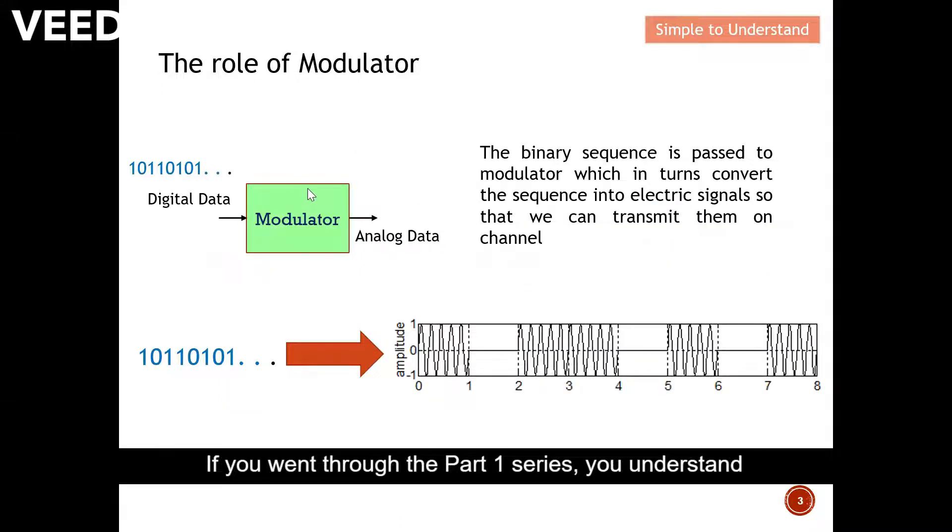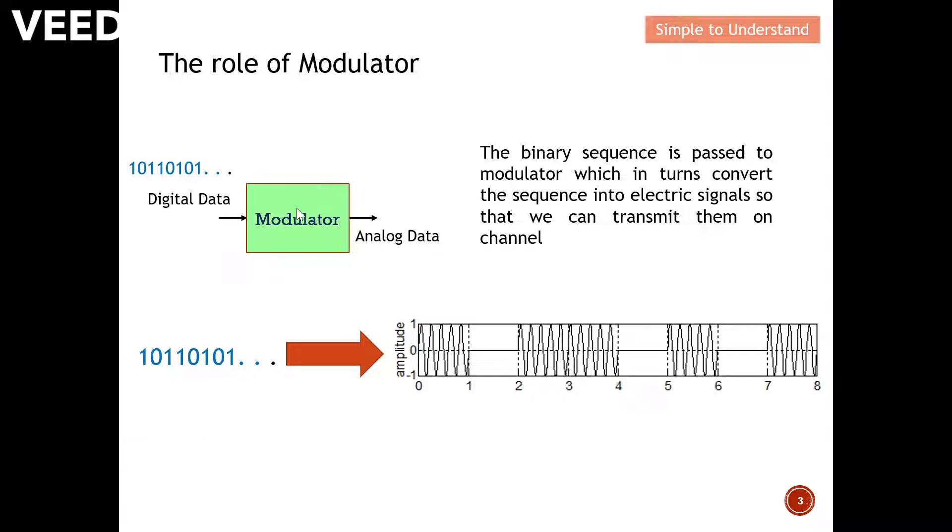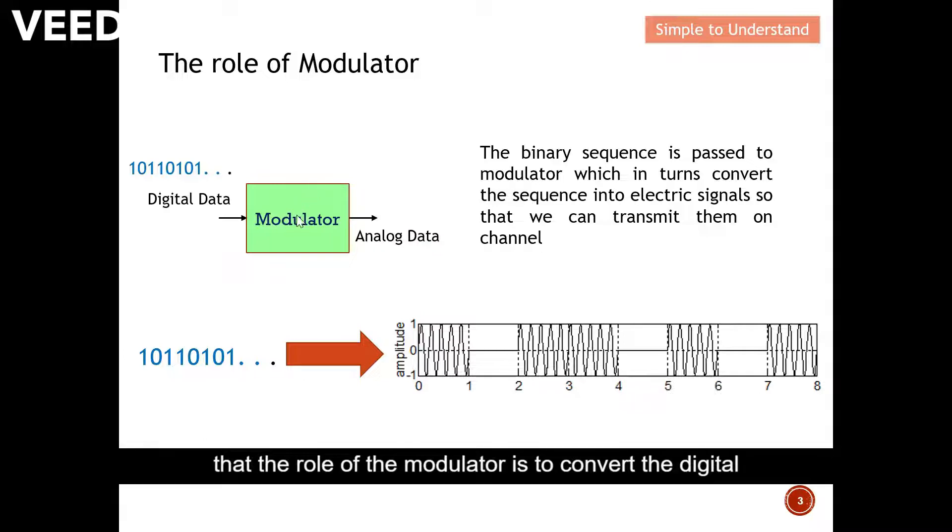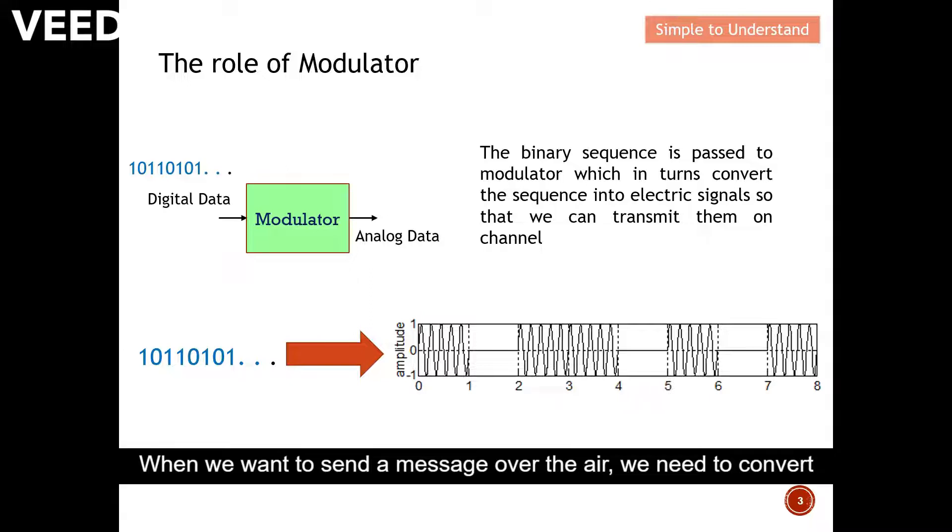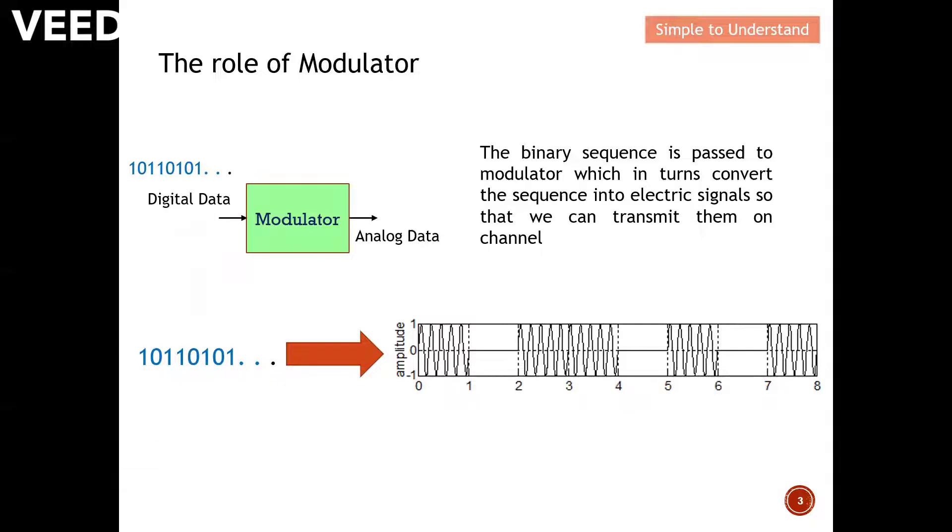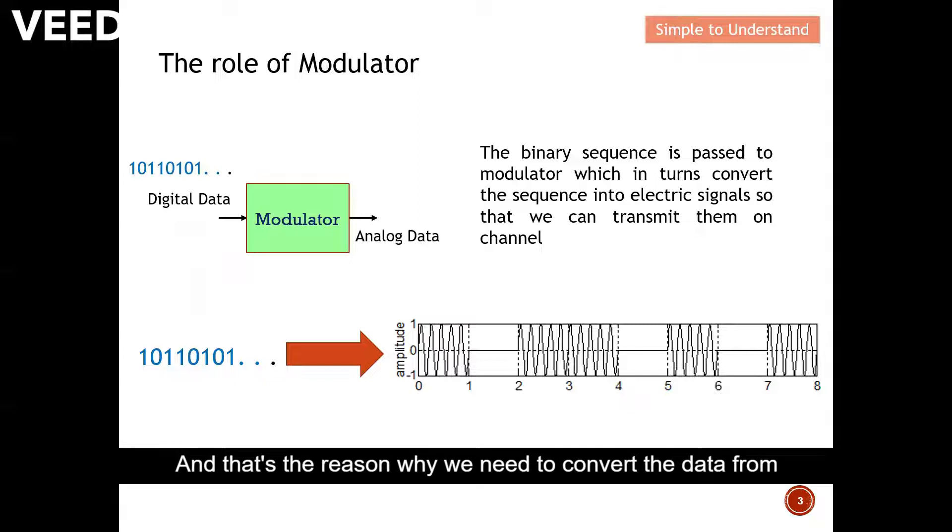So if you went through the part 1 series, you understand that the role of the modulator is to convert the digital data into analog data. Why do we need to convert the signal into analog data? When we want to send a message over the air, we need to convert the signal into electromagnetic wave. And that's the reason why we need to convert the data from digital into analog data.